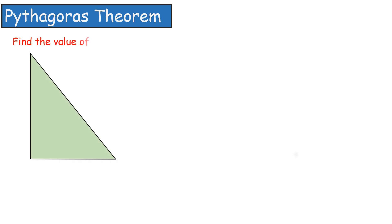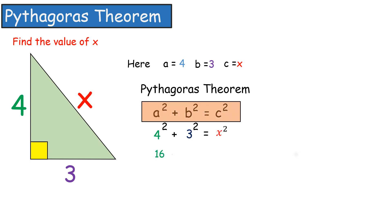If we take one example: here, A is equal to 4, B is equal to 3, C is equal to X. Substitute these values in the Pythagoras theorem. After simplification, we get X is equal to 5. Therefore, the length of the unknown side is 5 units.